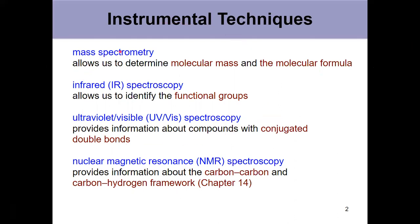Mass spec first, which will give us some information about molar mass and molecular formula. IR will tell us what functional groups we have present a lot of the time. UV-Vis will give us some information about conjugated systems.